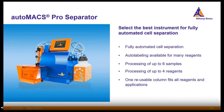The second instrument is the AutoMACS Pro Separator, which performs cell separation fully automated — including auto-labeling by adding microbeads to samples, then incubating and separating. Up to six samples can be separated in one run. This instrument uses a reusable column that can be used for up to two weeks, which is of interest for users performing many cell separations.